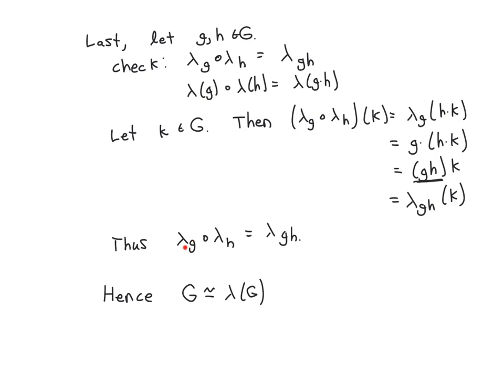And thus, lambda sub G composed with lambda sub H is lambda sub G times H. By the way, I probably should have pointed this out earlier. The reason they use lambda is lambda starts with the letter L, and you're doing left multiplication, so that is actually why they use lambda for this homomorphism. And so, this function is injective and preserves products.